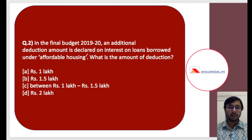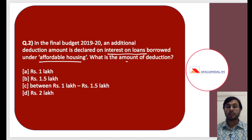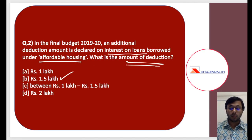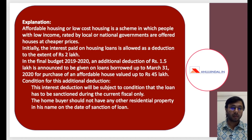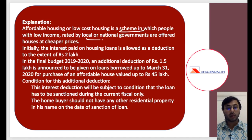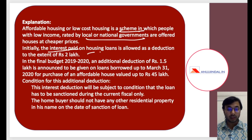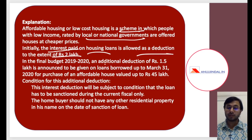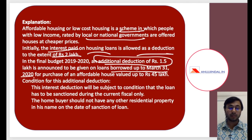The second question: in the final budget 2019-20, an additional deduction amount was declared on interest on loans borrowed under affordable housing PMAY. What is the amount of deduction? The answer is B — 1.5 lakh. Affordable housing is a scheme in which people with low income, supported by local or national governments, are offered houses at cheaper prices. Interest paid on home loans is allowed a deduction to the extent of rupees 2 lakh. In the final budget 2019-20, an additional deduction of rupees 1.5 lakh was announced on loans borrowed up to 31st March 2020.